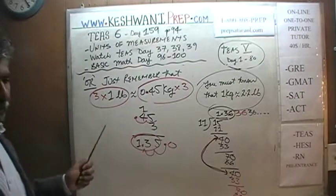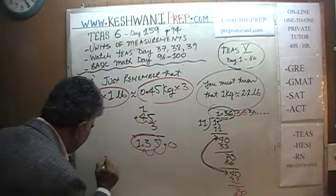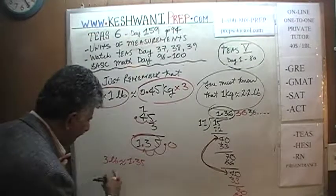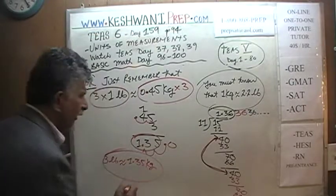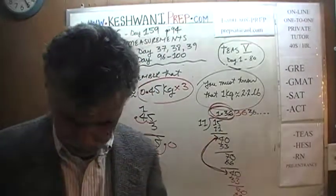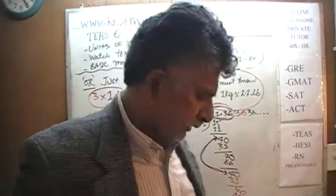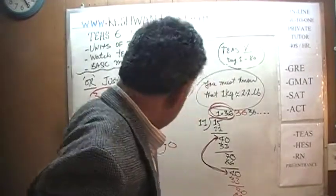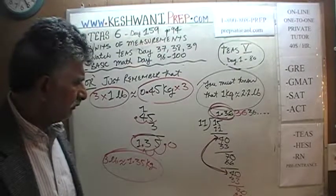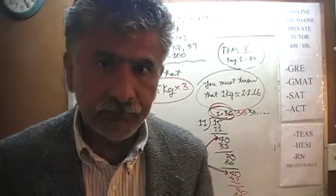So 3 pounds is approximately 1.35 kilograms. Before we said 1.36 kilograms — it's the same thing, close enough. You won't get the exact same answer both ways because it's an approximation. The reason is that 1 divided by 2.2 goes on forever — there is no exact answer, it never ends. I'll see you tomorrow.